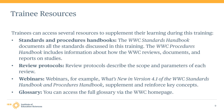Several resources are available to supplement your learning during this training series. The WWC Standards and Procedures Handbooks are key resources. These handbooks document all of the standards and procedures discussed in this training and include information about how the WWC reviews, documents, and reports on studies. You can also consult a review protocol to learn more about the scope and parameters of a review. If you pursue WWC reviewer certification, you will use review protocols to guide your work. The WWC also maintains a robust archive of webinars that supplement and reinforce key concepts covered in this training, as well as additional resources for educators, study authors, and WWC reviewers.